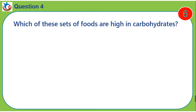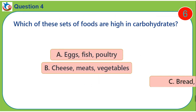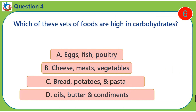Question 4. Which of these sets of foods are high in carbohydrates? A. Eggs, fish, poultry. B. Cheese, meats, vegetables. C. Bread, potatoes and pasta. D. Oils, butter and condiments.